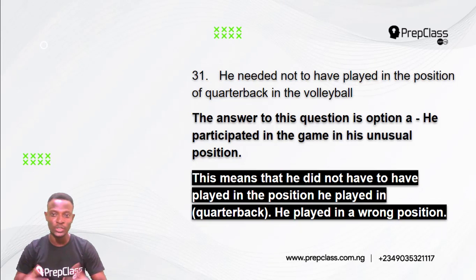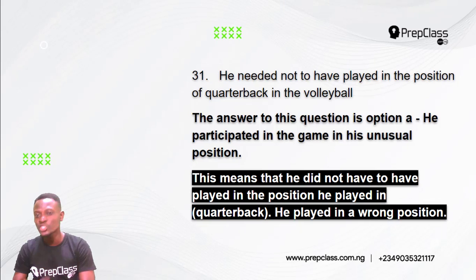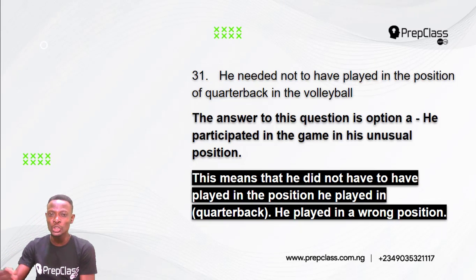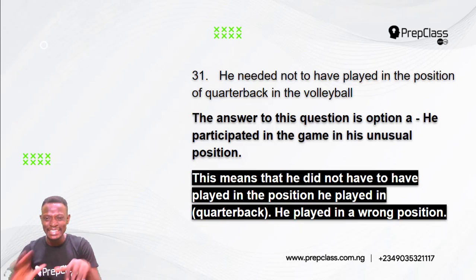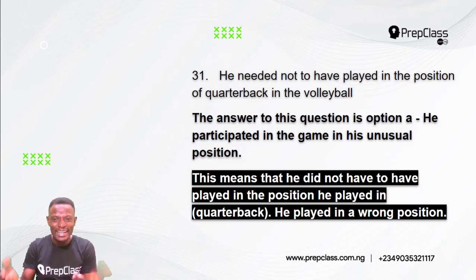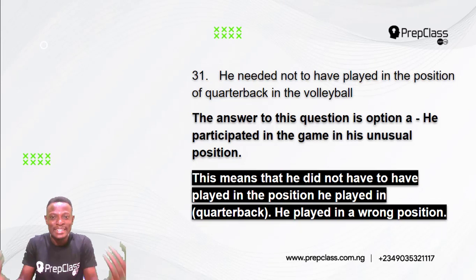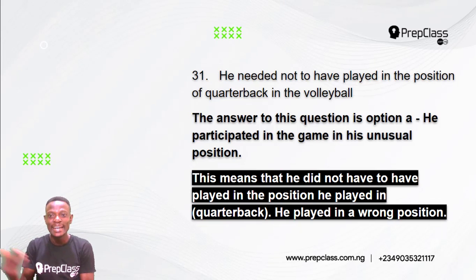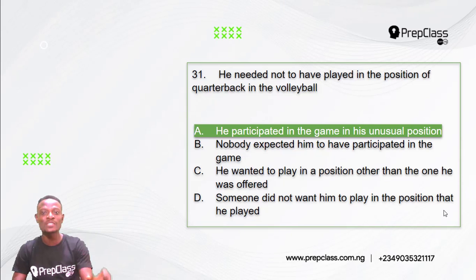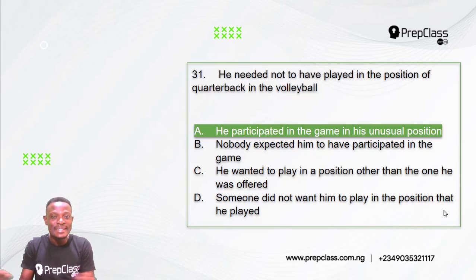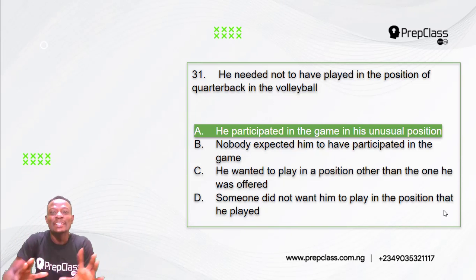The answer to this question is Option A: He participated in the game in his unusual position. 'He needed not to have played in the position of quarterback' means he did not have to have played in that position — he played in the wrong position. The quarterback is not his usual position, but he played there. Although somebody said he shouldn't have played there, he participated in the game in the quarterback position, which is his unusual position.